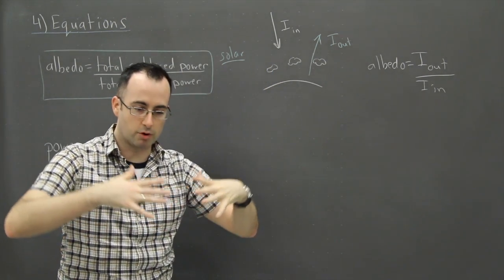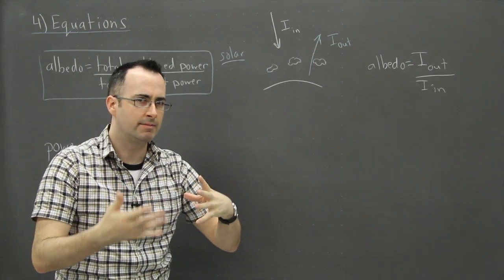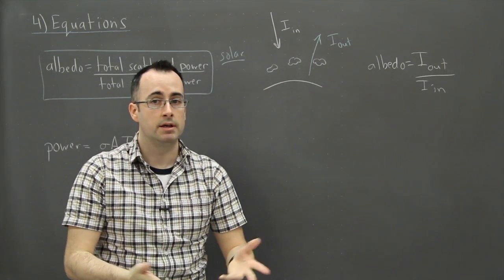Whereas if the albedo is, let's say, near zero, that means light comes in and almost nothing comes back out. That's because it's absorbing it all and doing different things. It's a very complex process because of course there's all sorts of things in the atmosphere.